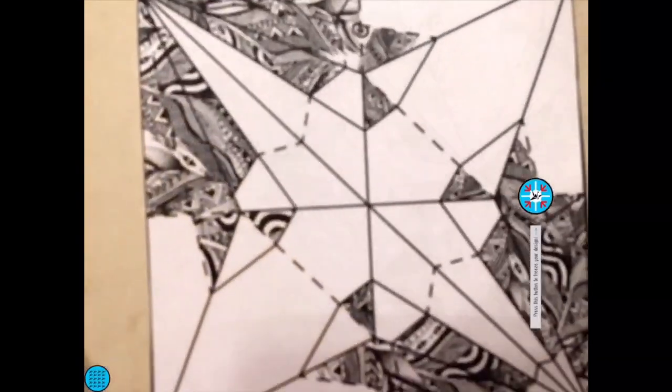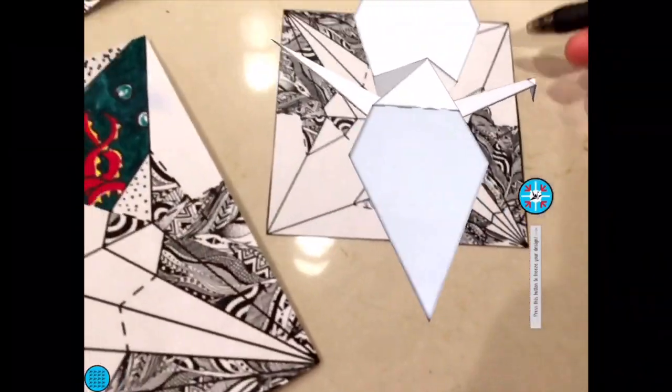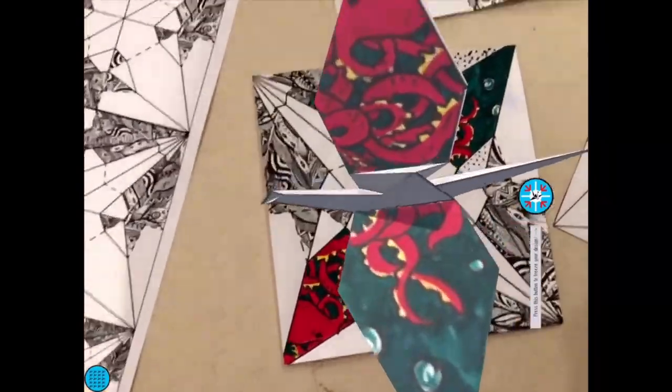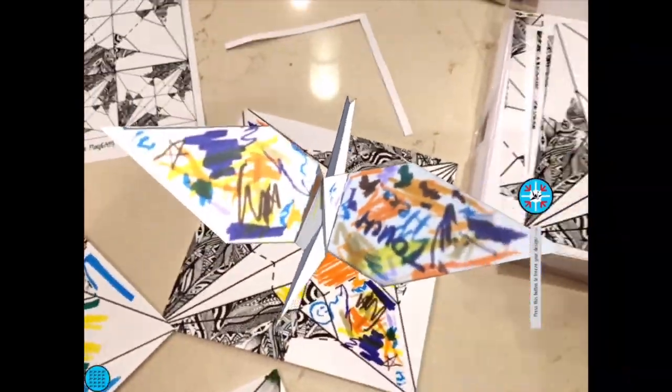Our very first real to digital origami creation is a crane. We begin with our magical origami paper which you can use to design your origami creations with real pens.